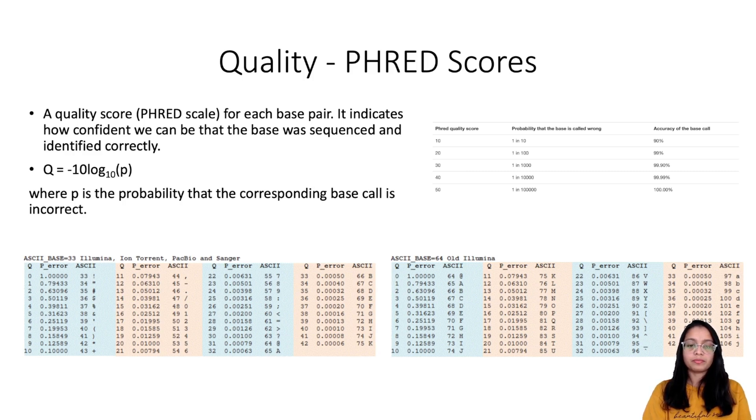To give you a little more intuition, let me give an example. Let's say a machine reads an adenine nucleotide and assigns it a quality score of Q20 on the PHRED scale. That means it is 99% sure that it has identified the base correctly. Although 99% confidence is an extremely high level of confidence, we can still expect it to be wrong in one case out of 100.